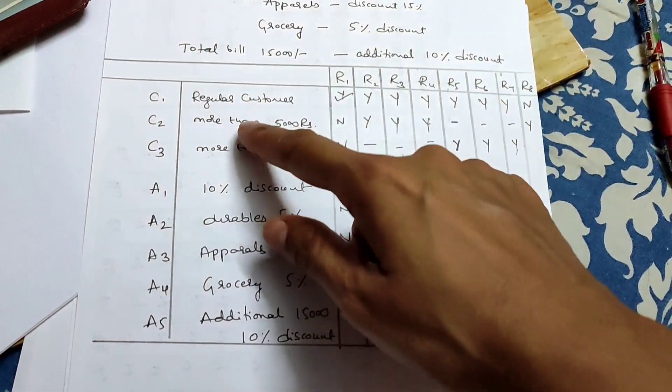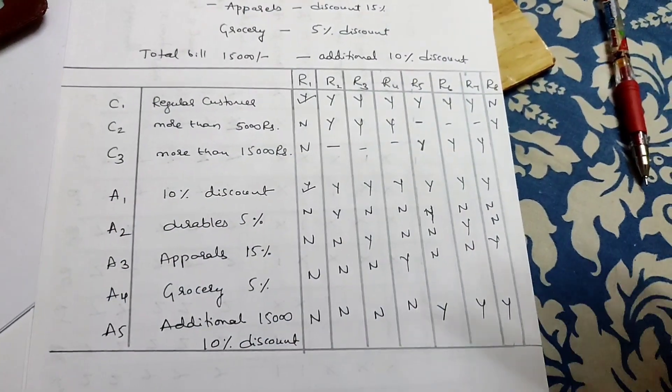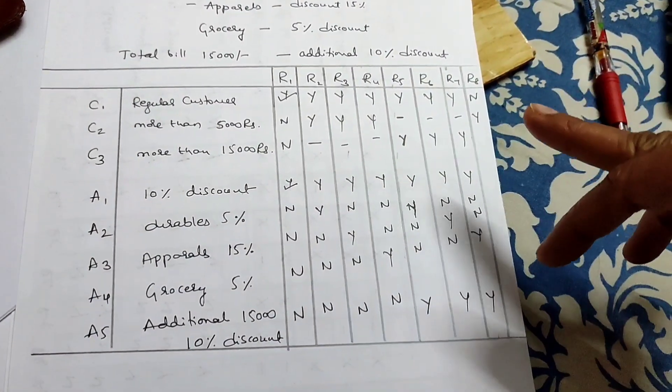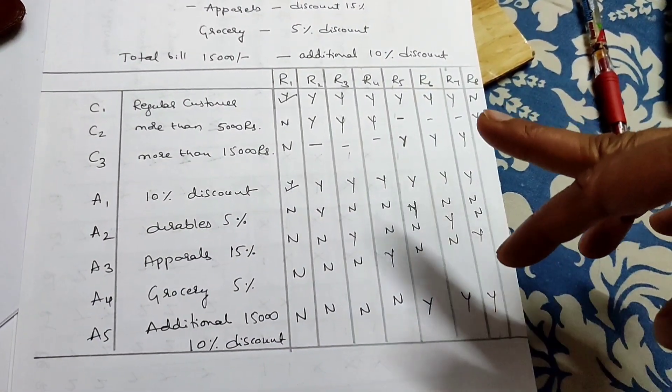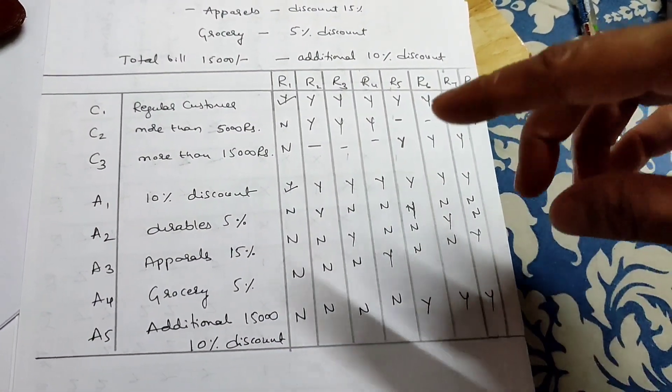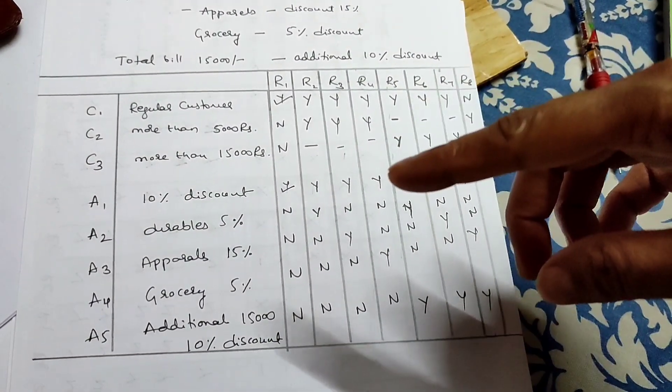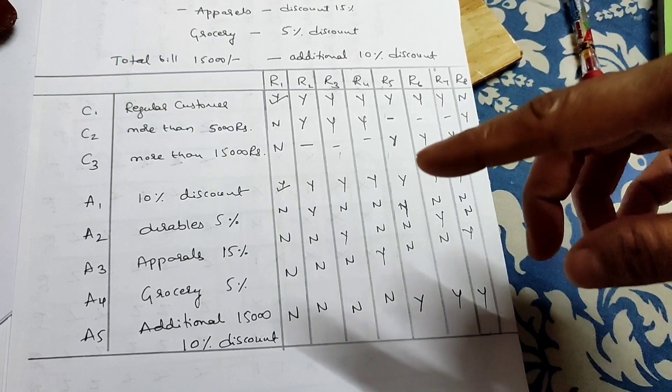So the first option is regular customer, the second option is irregular customer. These are the two customer type conditions we will set up as columns in our decision table.